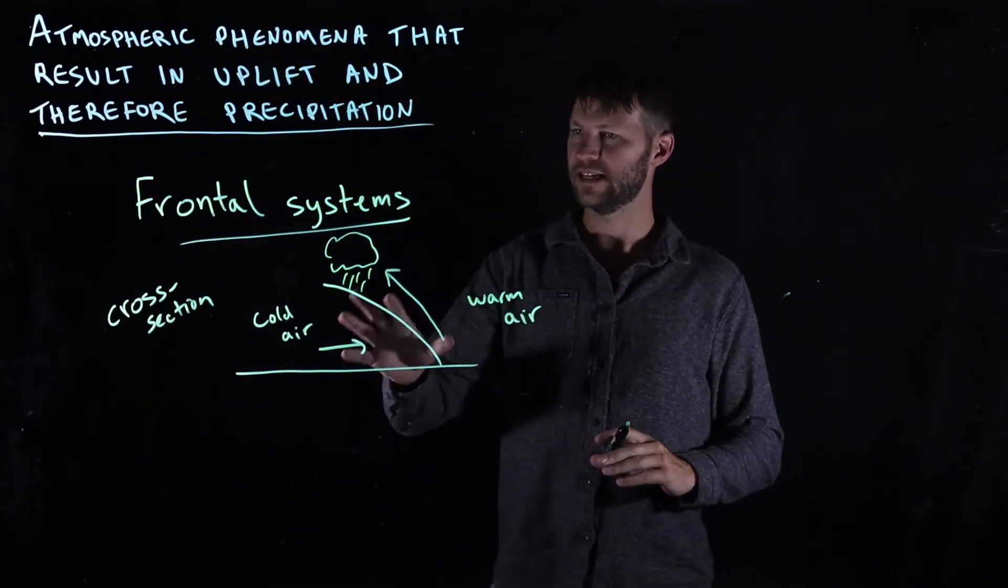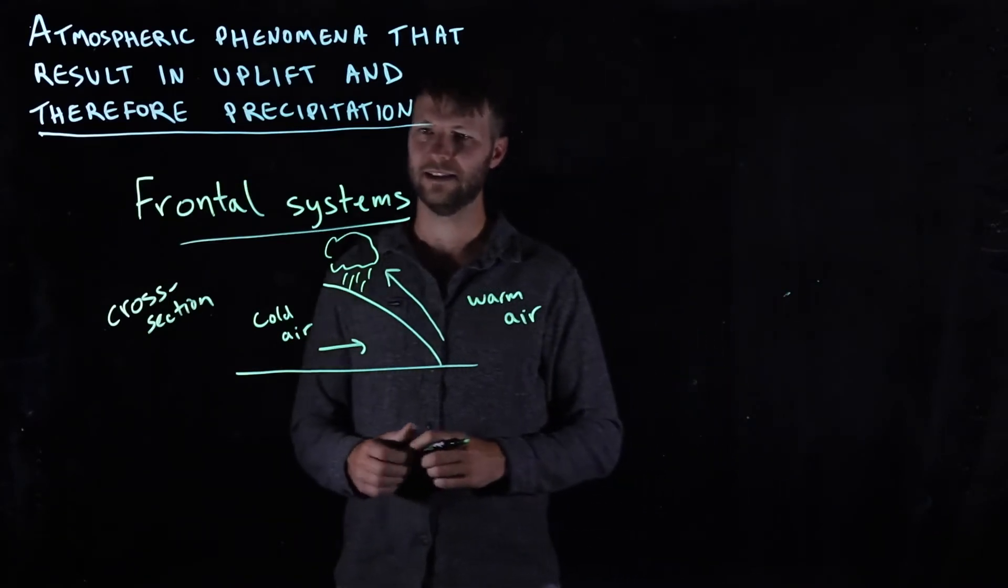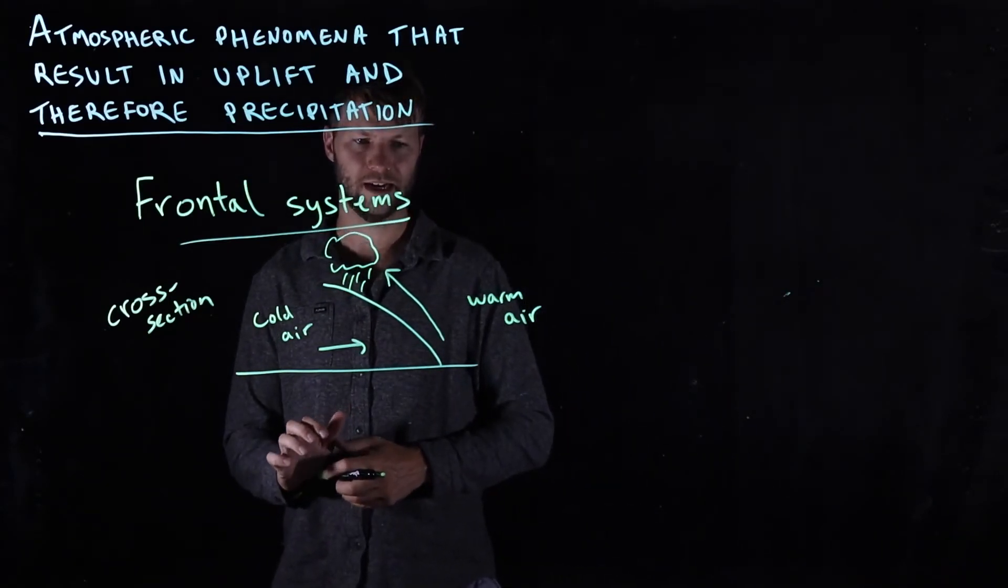Now, these kinds of frontal systems typically dominate precipitation patterns in the mid to high latitudes globally, so they are very common throughout the continent.